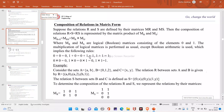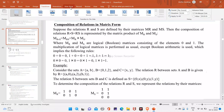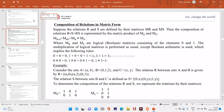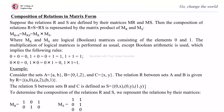Let us start with the composition of relations in matrix form. Suppose R and S are defined by the matrices M_R and M_S, then the composition of relations R∘S is represented by the matrix product of M_R and M_S. That is, M of R∘S equals M_R cross product M_S, where M_R and M_S are logical matrices having zeros and ones.